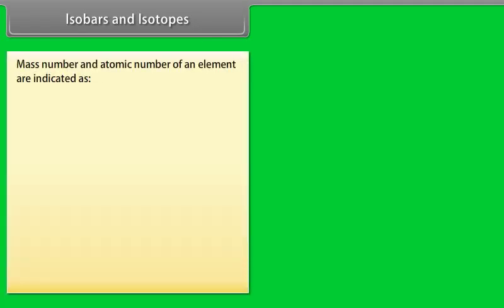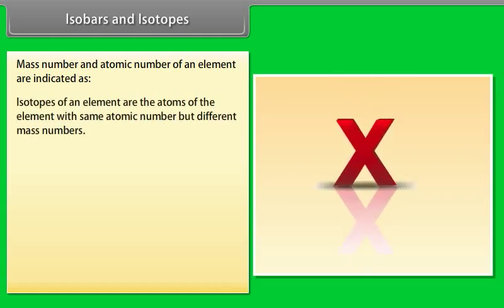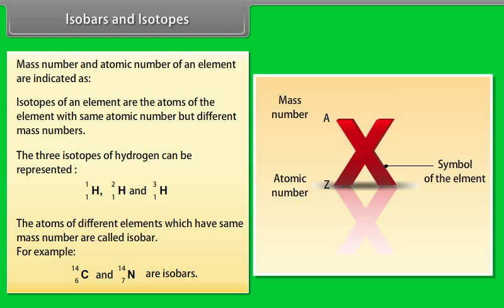Isobars and isotopes: Isotopes of an element are atoms with the same atomic number but different mass numbers — for example, the three isotopes of hydrogen. Isobars are atoms of different elements which have the same mass number.